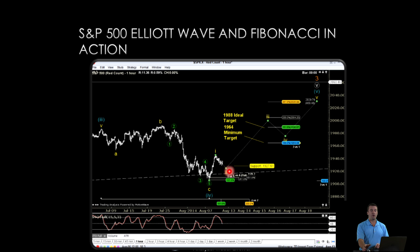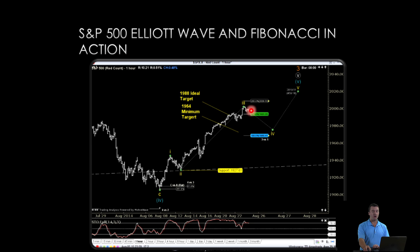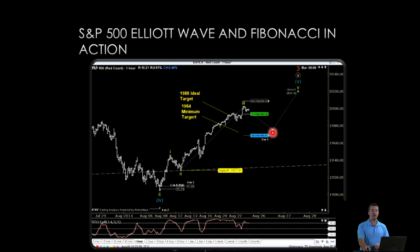For example, this is one of the most recent trades we've had — buying a wave two pullback in the S&P using a combination of Elliott and Fibonacci. We had a 1964 minimum target in the S&P and a 1988 ideal target in the S&P, and there we go right up to the targets. And this is today's chart where this unfolds. We're looking for a wave four pullback and will use our typical Fibonacci ratios to figure out how far wave four is going to go before we finally have another move up in wave five here in the S&P.